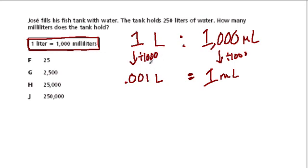If you think about dividing by 1,000, it's like dividing by 10 three times, so it's 10, 10, 10, it's 1,000th of a liter. And that will help us out in this problem, because what it says is, Jose fills his fish tank with water, the tank holds 250 liters of water, how many milliliters does the tank hold?